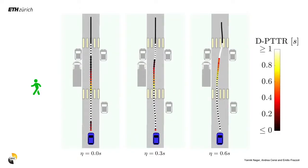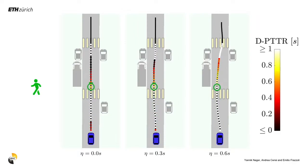Additionally, we can identify critical sensing directions where hidden agents could appear, and quantify the maximal reaction time with respect to that direction that is necessary to avoid a collision.